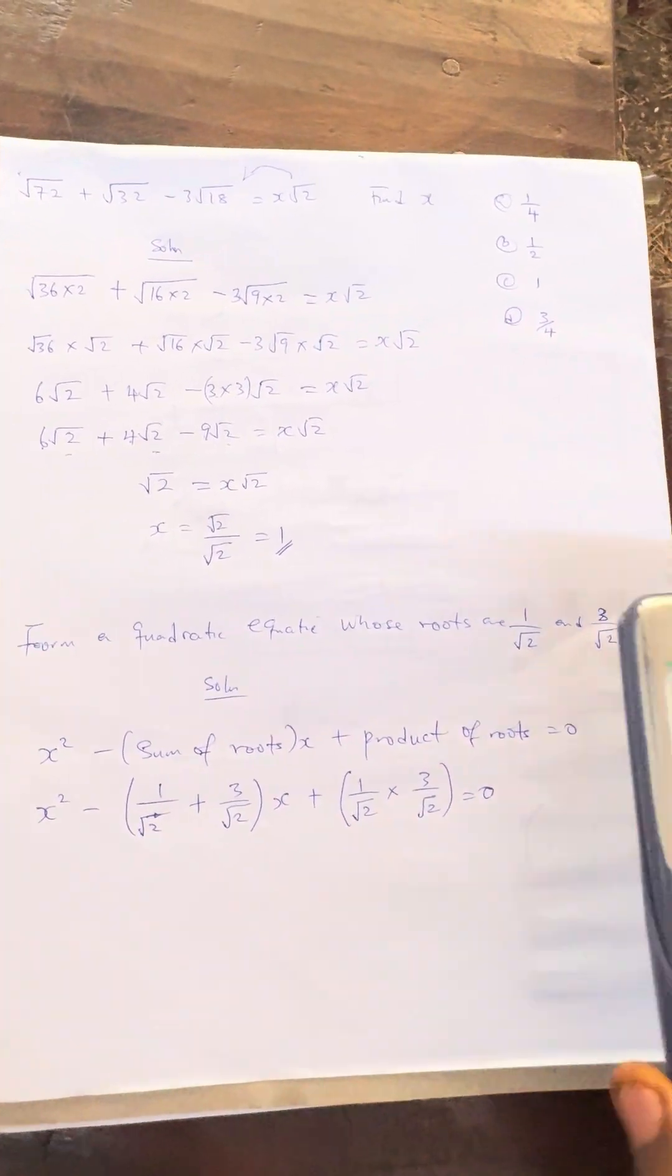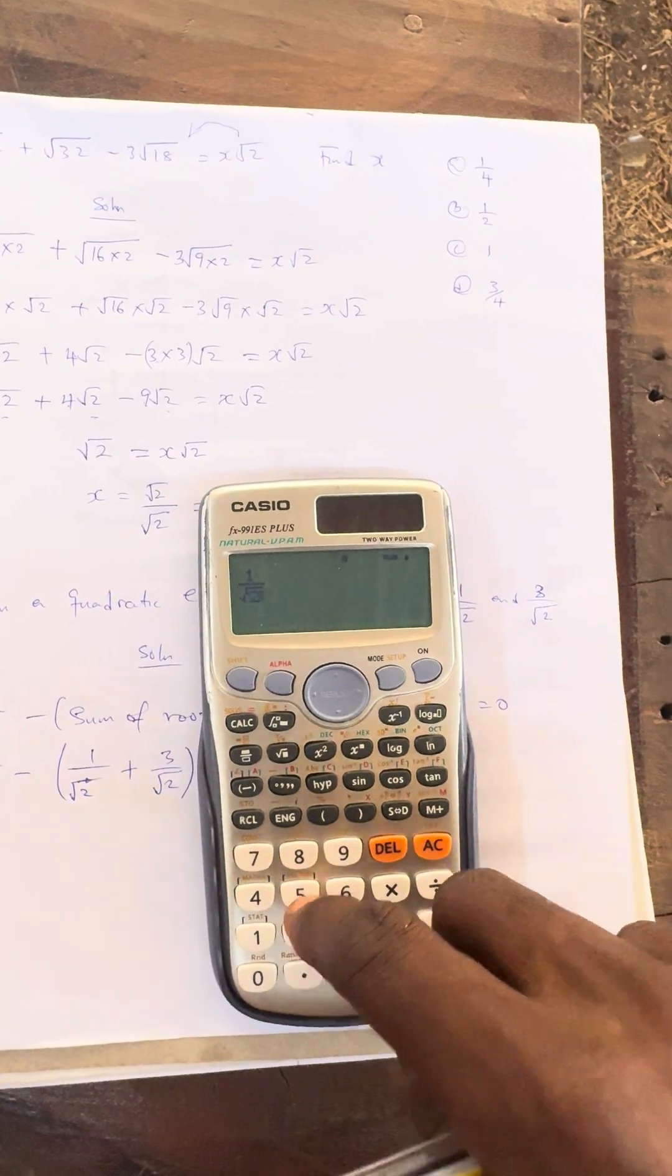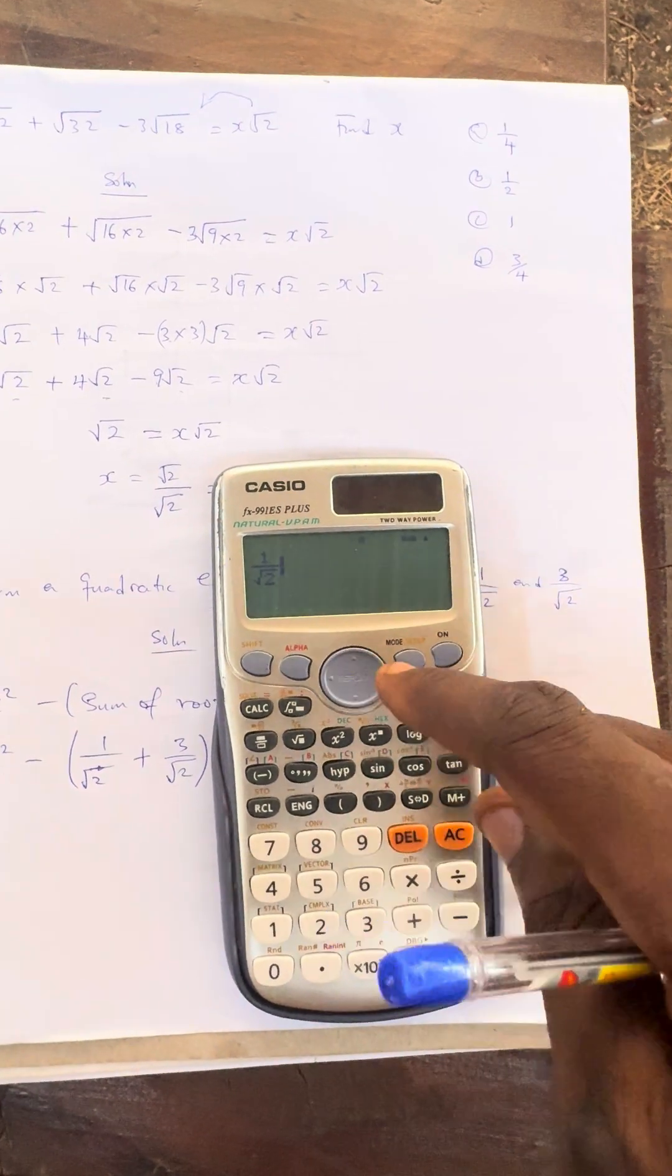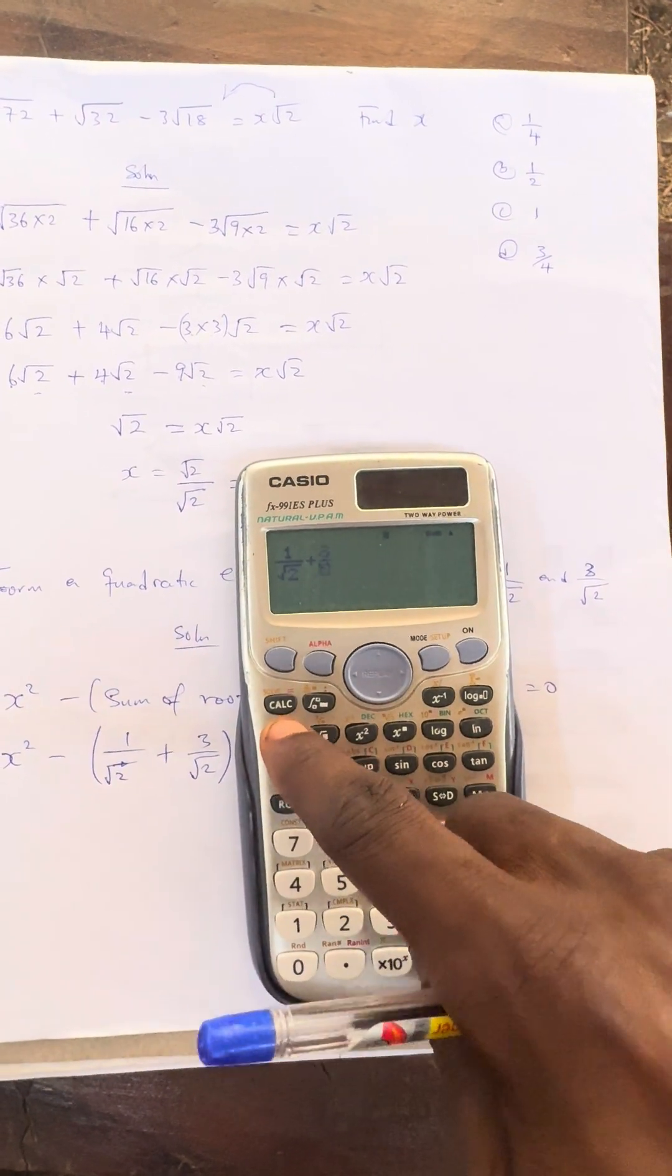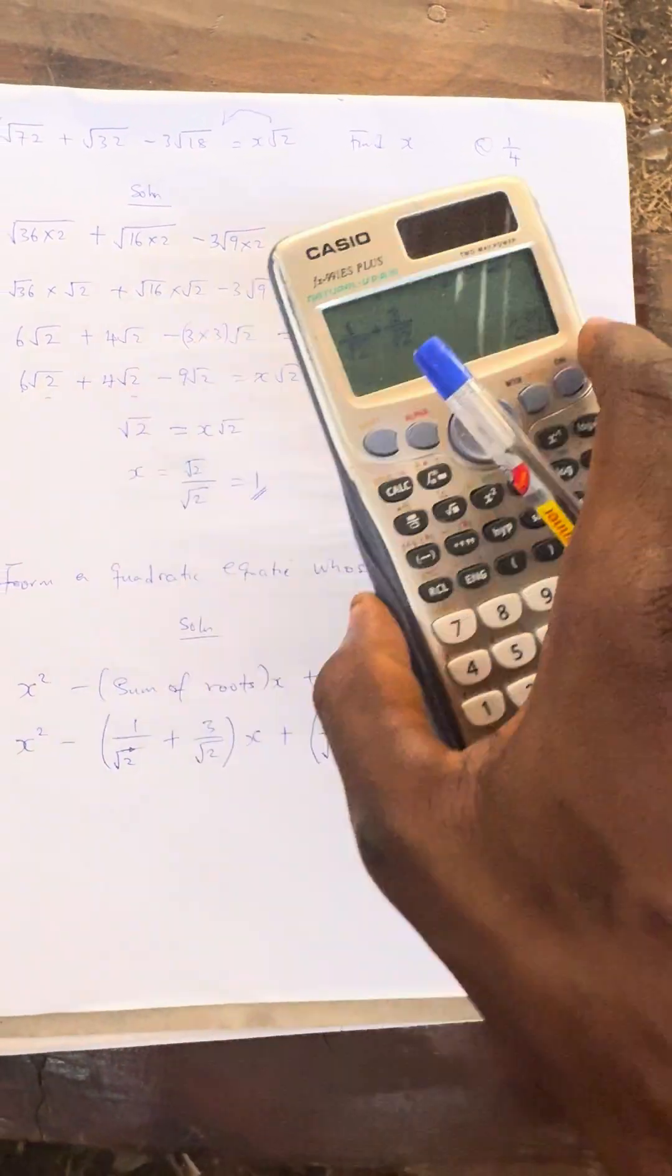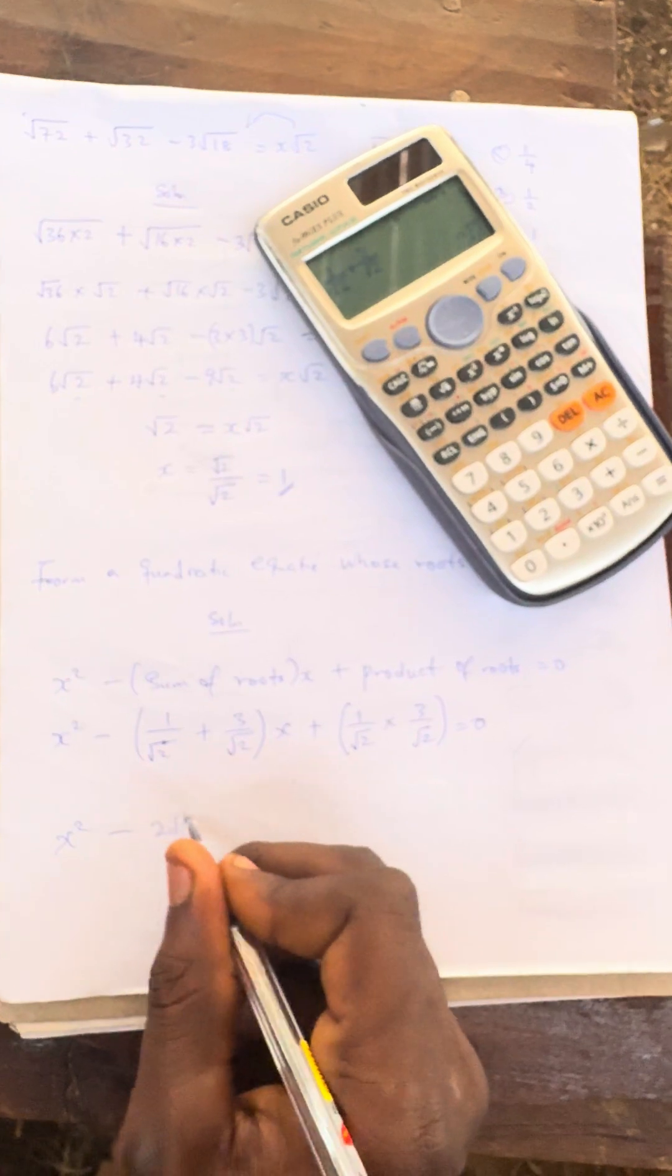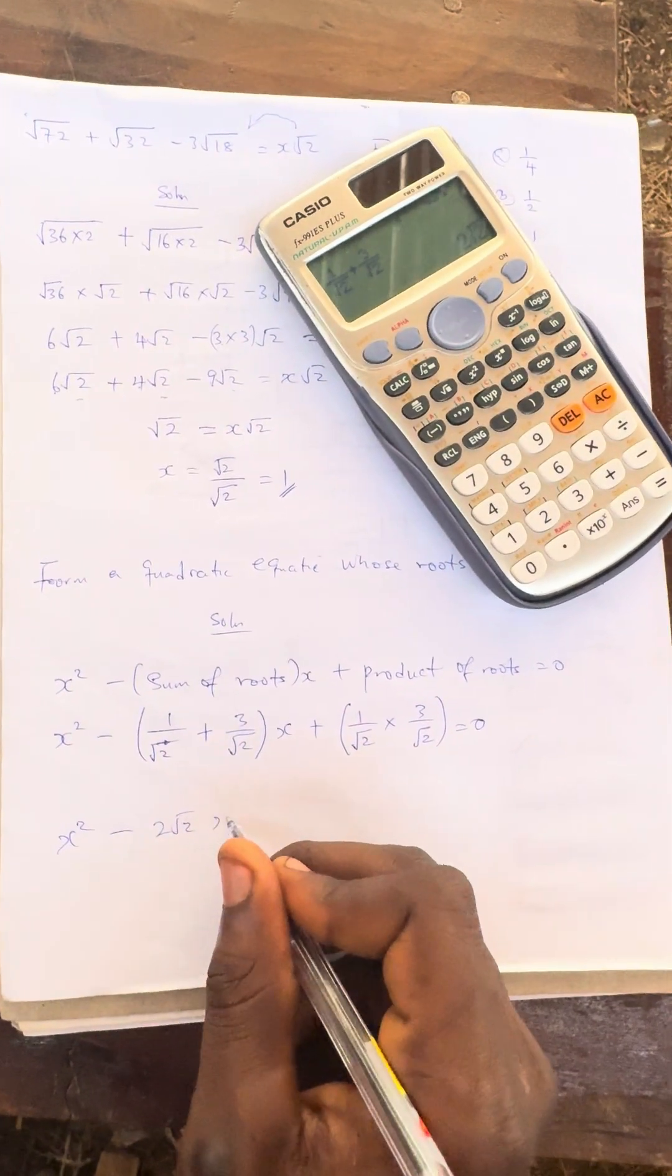If you don't want to press the sum, or let us sum it. That is 1/√2 plus 3/√2. The answer is 2√2. So it becomes x² - 2√2x.